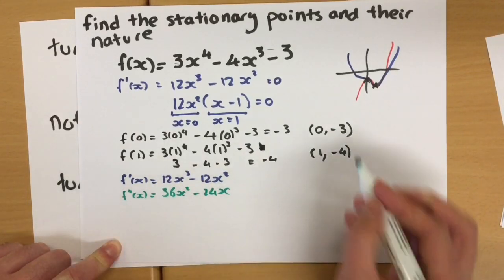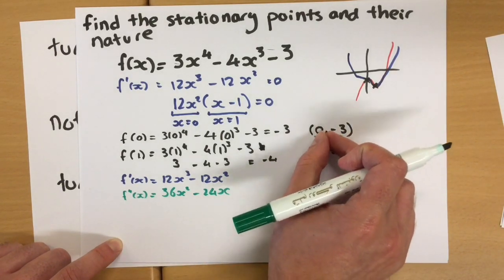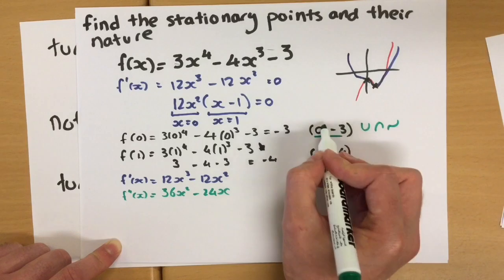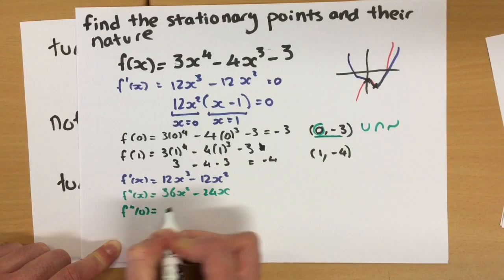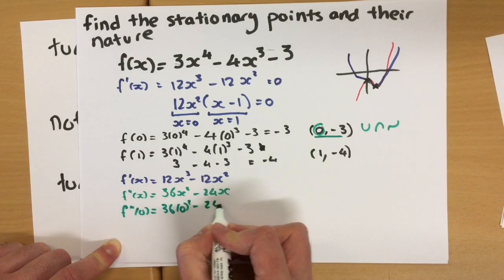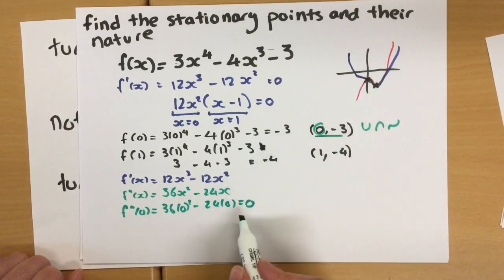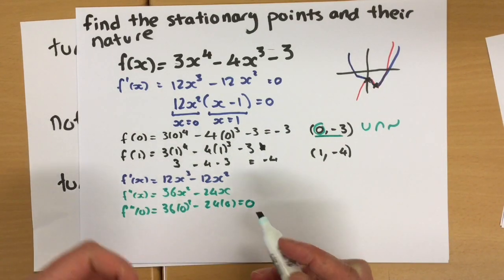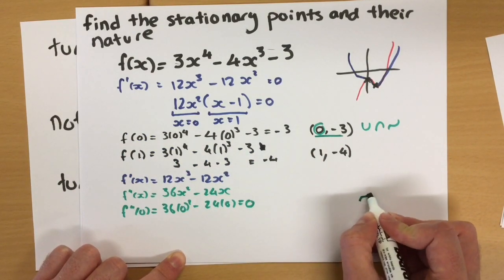Let's take these two points in turn. Let's take the first point here, zero minus three. So to check what type of turning point this is, is it a minimum, a maximum, or an inflection, we're going to substitute in the x value into this equation. So we're going to substitute in x value of zero. So 36 times zero squared take 24 times zero is zero. This is telling us that around this point, the gradient isn't turning to something else. If it was positive, it's still positive. If it was negative, it's still negative. So we're looking at a point of inflection. So either like that or like that.